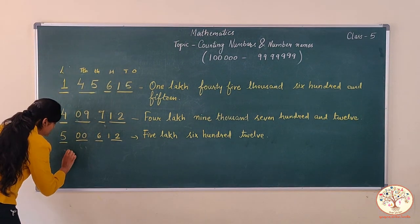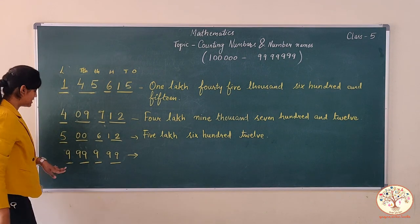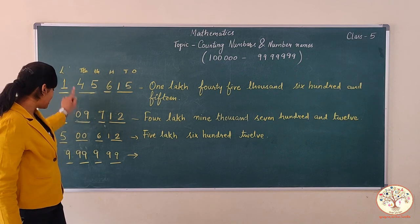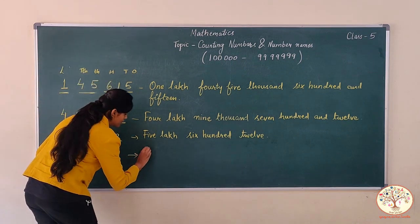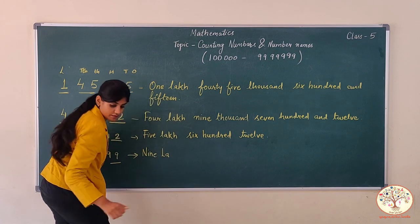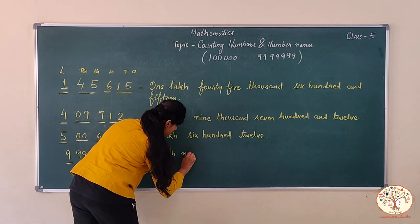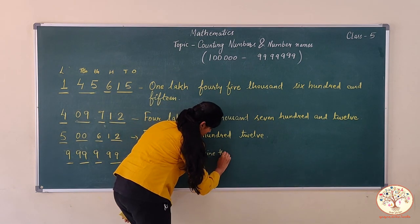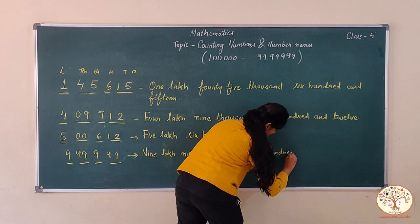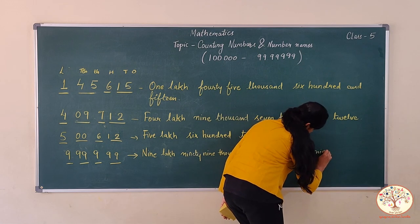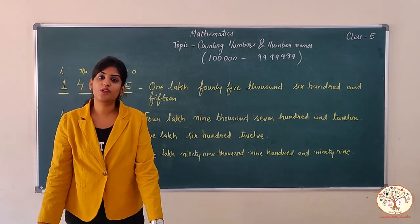Now let's take the largest six-digit number and write its number name. Divide it into four parts. This will be nine lakh, ninety-nine thousand, nine hundred, ninety-nine. So nine lakh ninety-nine thousand nine hundred and ninety-nine is the number name for the largest six-digit number.